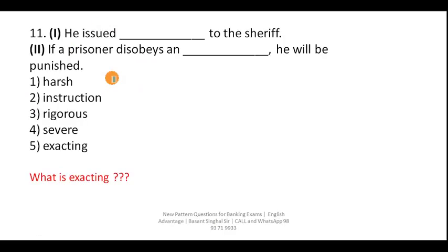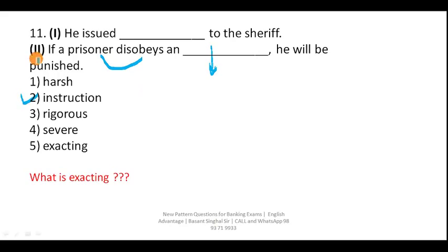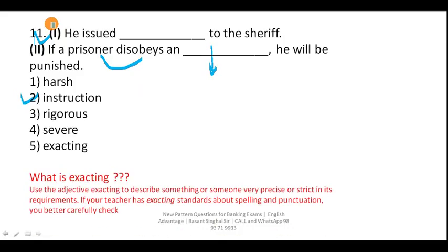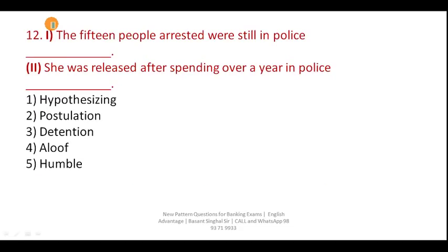Question eleven: 'He issued ___ to the sheriff — if a prisoner disobeys, he will be punished.' If a prisoner disobeys an instruction, he will be punished. So your correct answer is option two — instruction — and it also fits in the first blank. Exacting means demanding or challenging — something that is very precise or strict in its requirements.